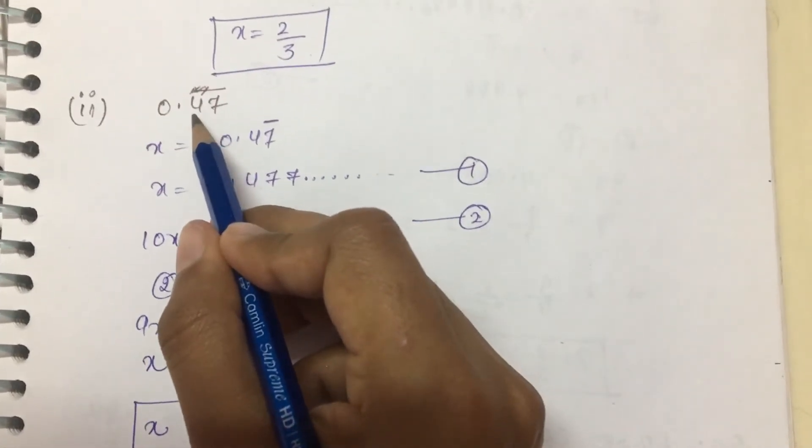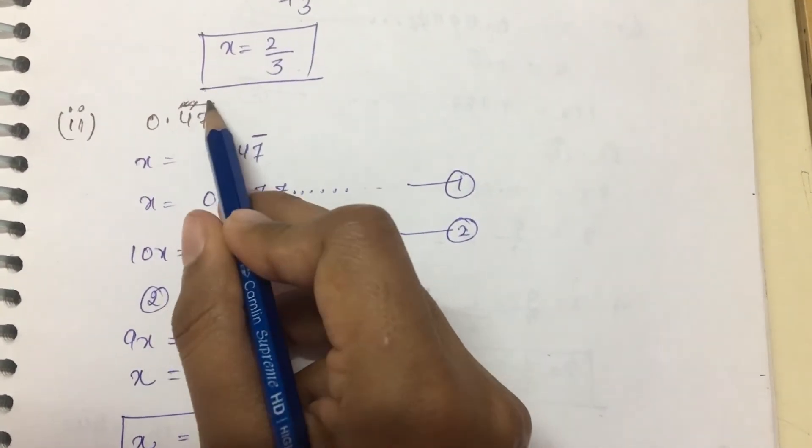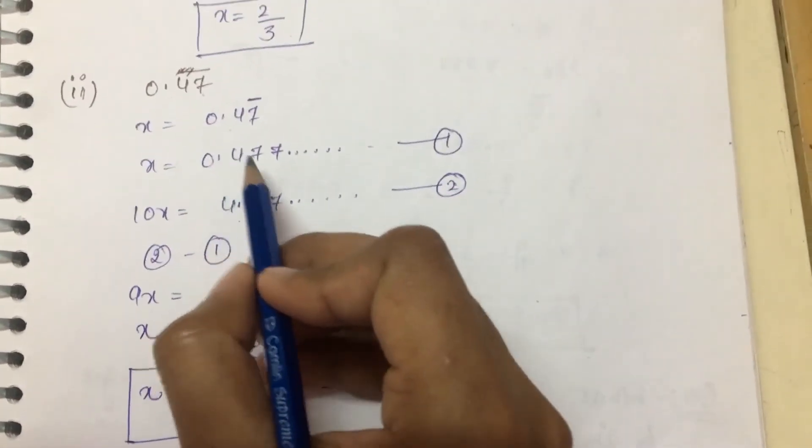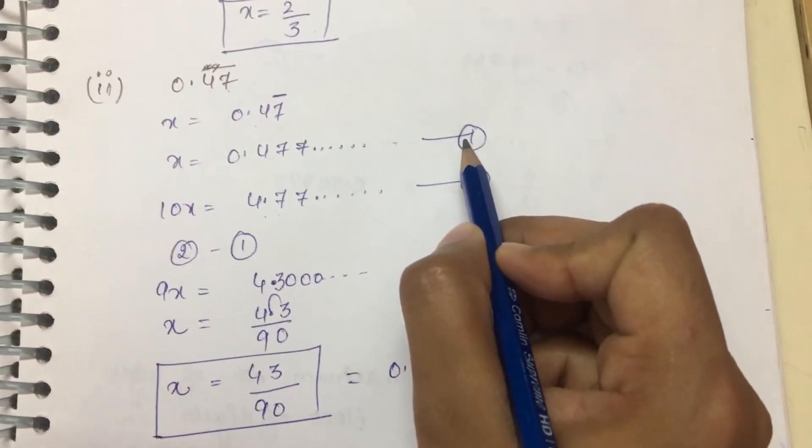The second part is 0.47 bar where 7 repeats. It is 1 digit repeating. So we let this number equal x. This is equation number 1.